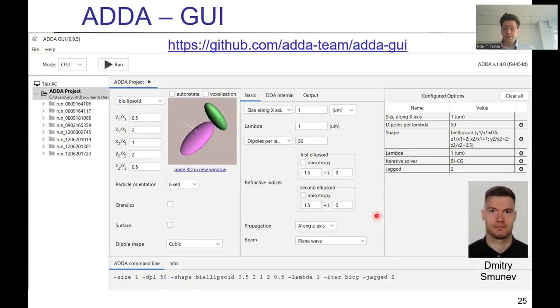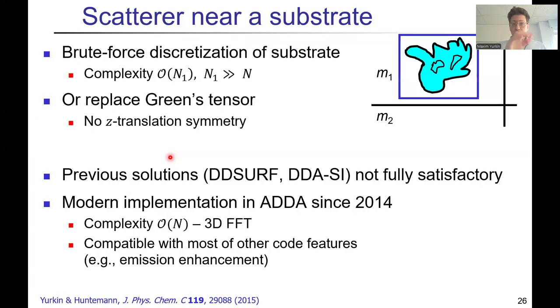Also, we have a graphical user interface, which is developed by Dmitry Smunov. And while it's very nice for a quick start of the method, so you can understand what's possible, it will even show you the particle that you simulate in real time. So you can change like parameters here and see how it changes. So maybe it's not that nice for some high throughput simulation. But to get used to the code, that's really nice feature.